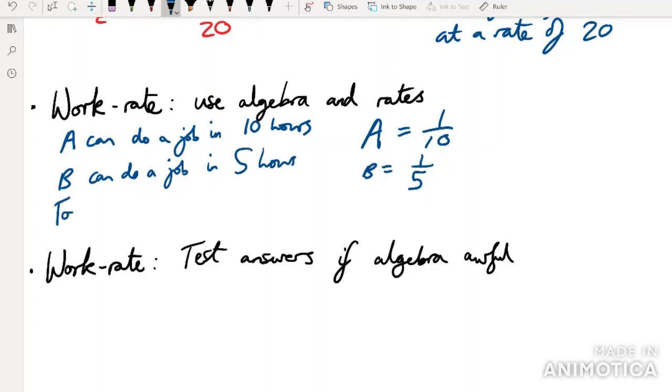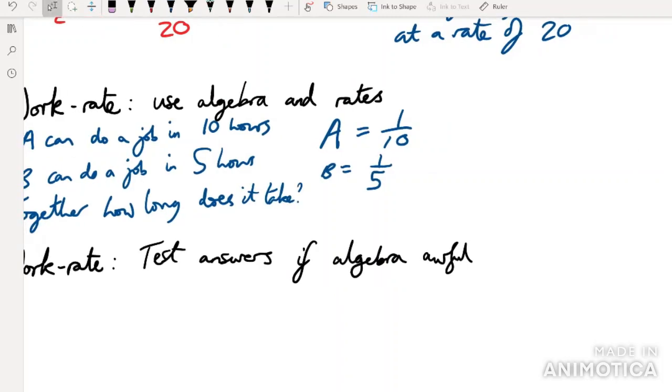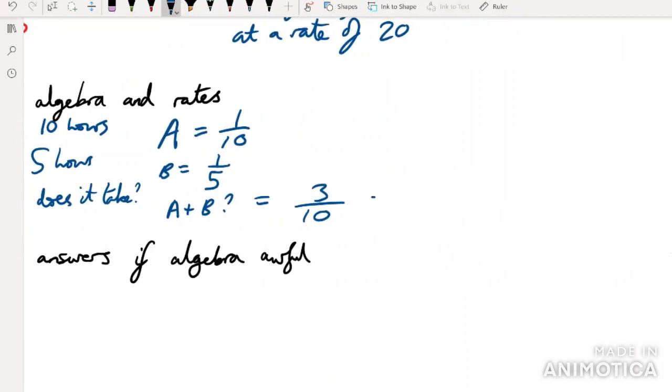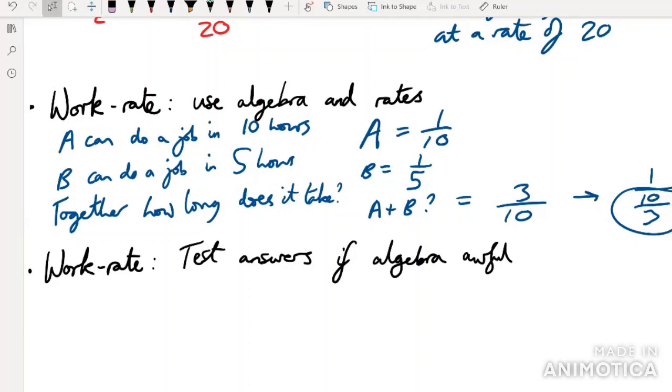And so they ask, together, how long does it take? So then your question becomes effectively, what is A plus B? And so we just do that, which is going to end up being 3 over 10. And then putting that in the same form, that's 1 over 10 over 3. So the answer will just be 10 over 3. And you'll see a lot more examples of that in the example video. But just make sure you get used to using algebra and using rates.